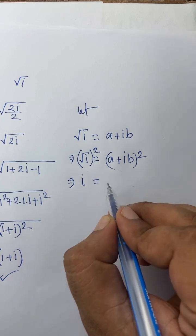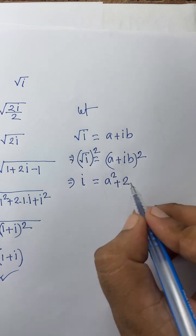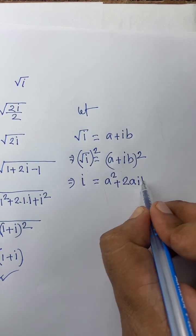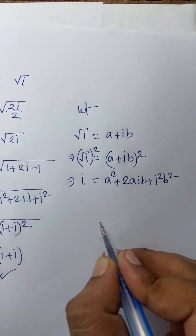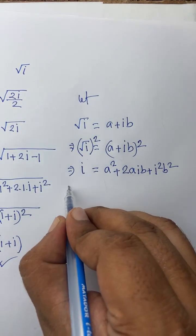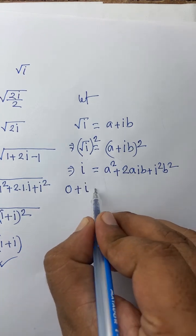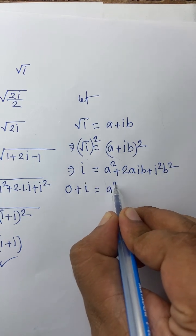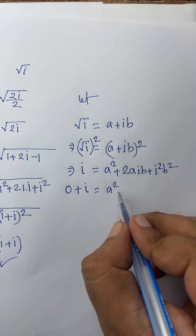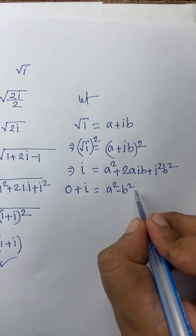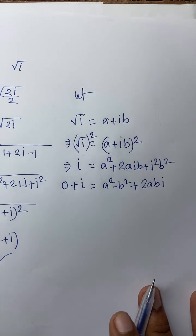We know that (a plus b) whole squared equals a squared plus 2ab plus b squared. According to this rule, I can say it will be a squared plus 2abi plus b squared times i squared. We know that i squared equals minus 1, so it becomes minus b squared plus 2abi.